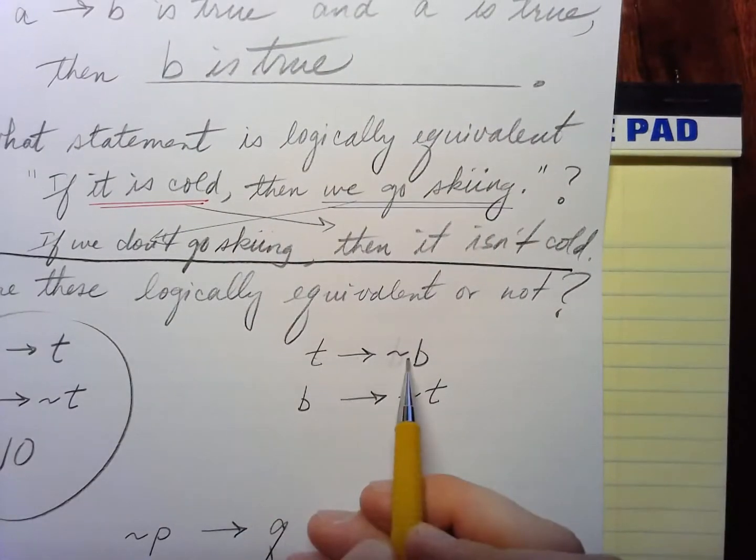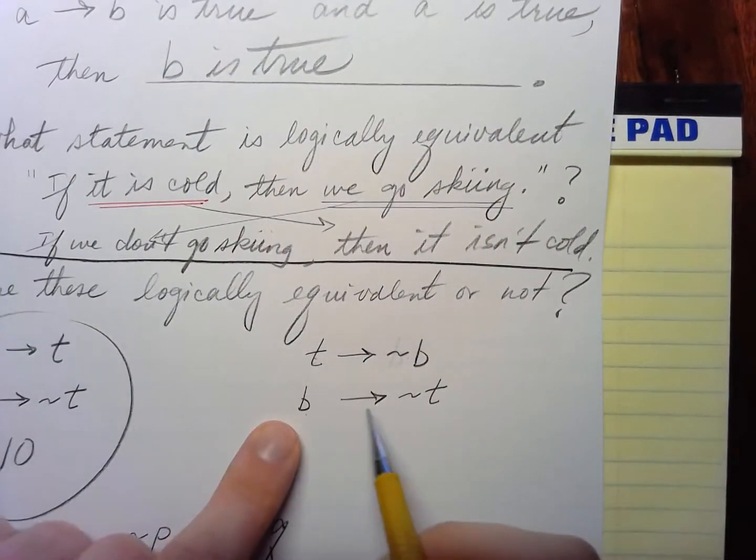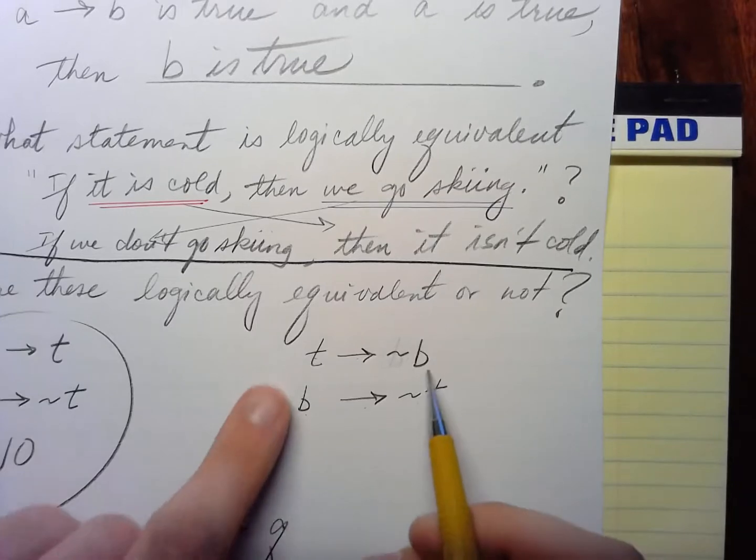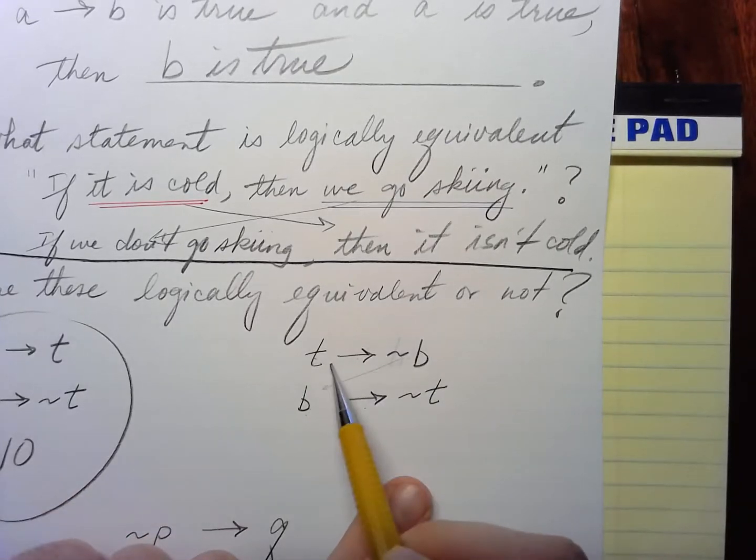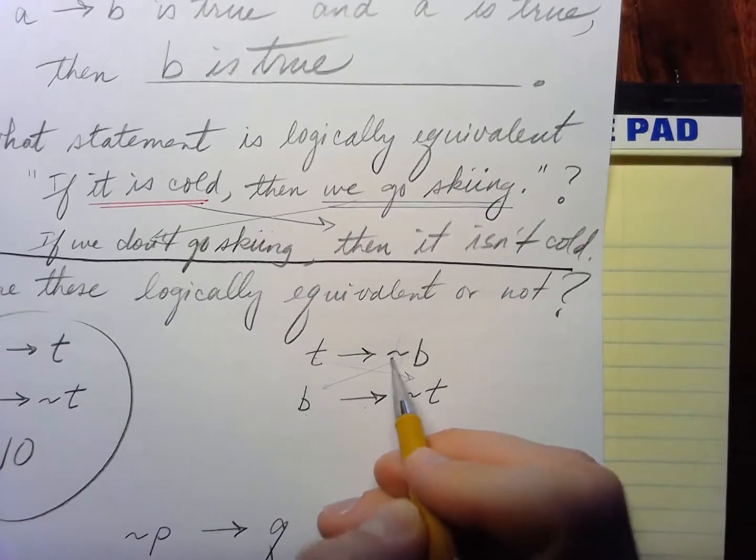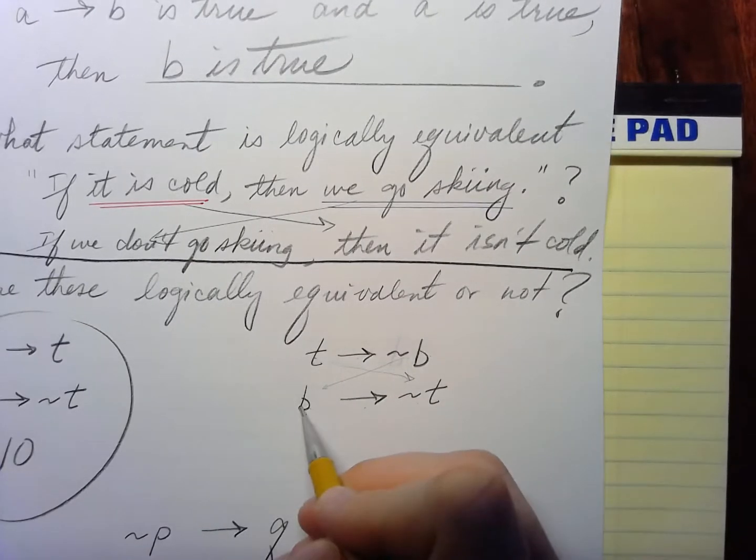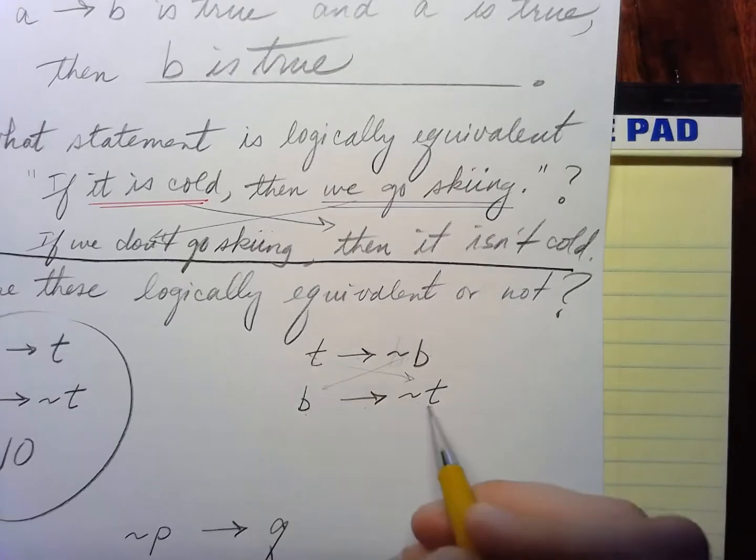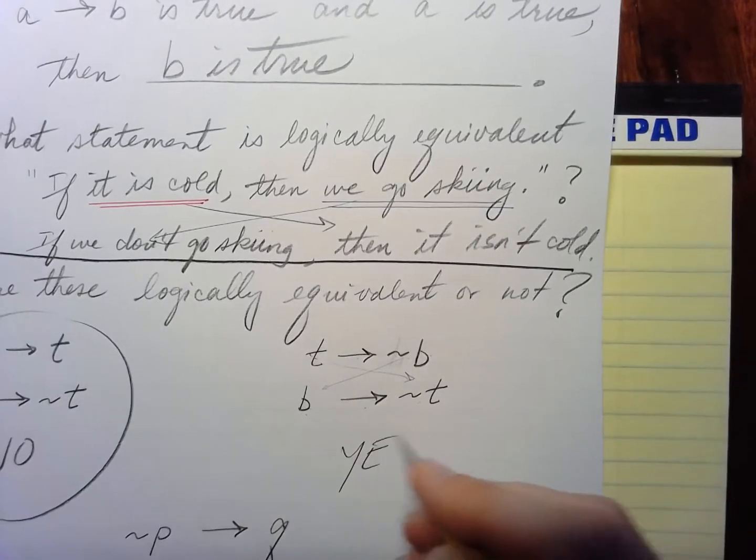T implies not B. B implies not T. So we've switched them. We've taken the B over here, and the T over here, and we've negated both. Because what is not not B? Well, it's just B. And then what is not T? It's that. So this is a yes.